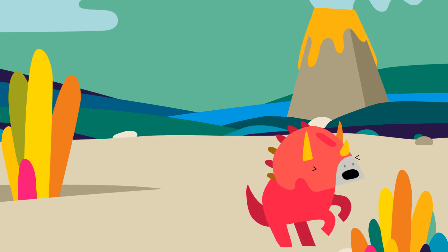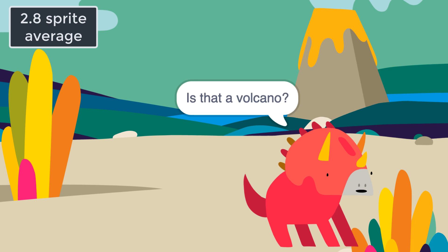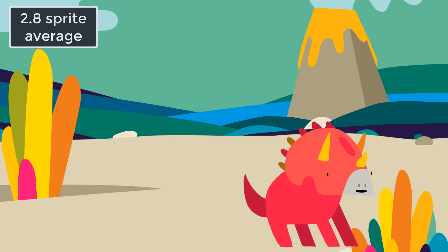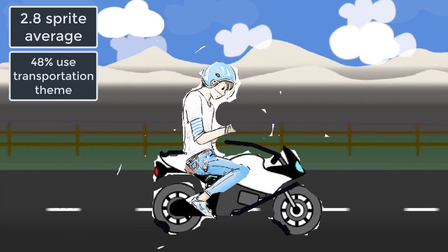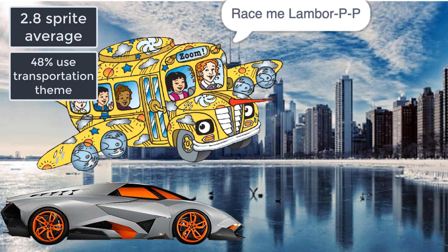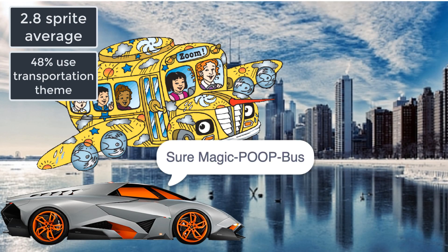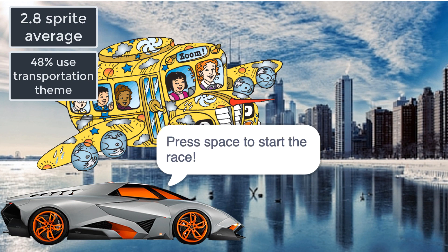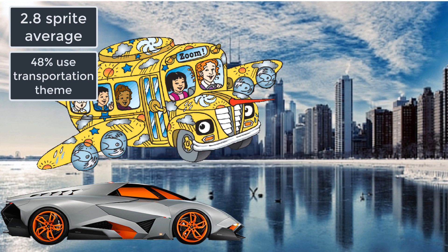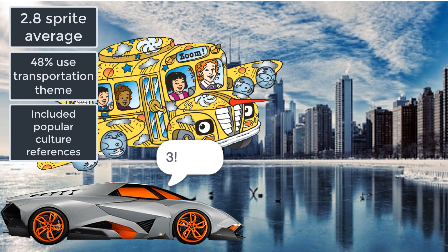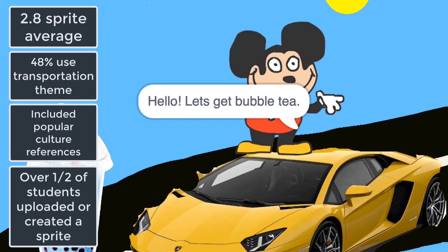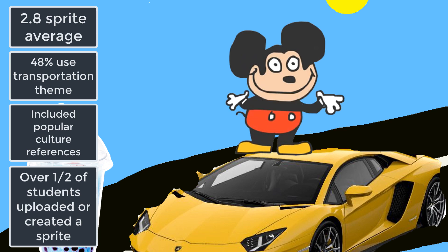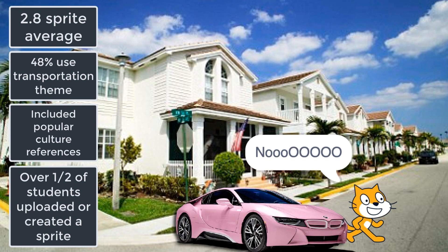Students used an average of 2.8 sprites, but some as many as 14 sprites in their projects that didn't have a starter. Although the create projects did not use the starter project, 48% still included a transportation theme, though the modes of transportation were a little different and included Lamborghinis, food trucks, Thomas the Tank Engine, and more. Projects that did not have a transportation theme used common game characters like Kirby and Pokémon, television, and memes as inspiration. Over half the students who created projects without a starter project uploaded or created their own costume for use as the main sprite rather than using sprites from the Scratch library.